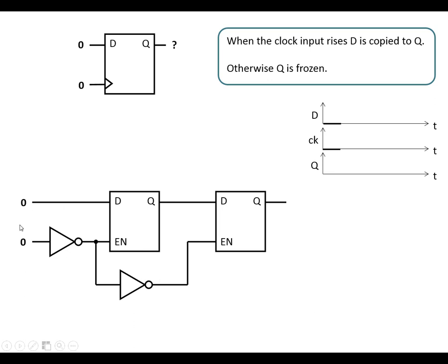We've got both the D input and the clock input low. The clock is inverted, which means we've got a 1 at the enable of the first latch, so D is going to be copied to Q — we've now got a 0 in the middle of the flip-flop. Because of the inverter, the second latch has a 0 at its enable, which means Q is going to be frozen. So whatever state it's in, it's going to stay in that state.